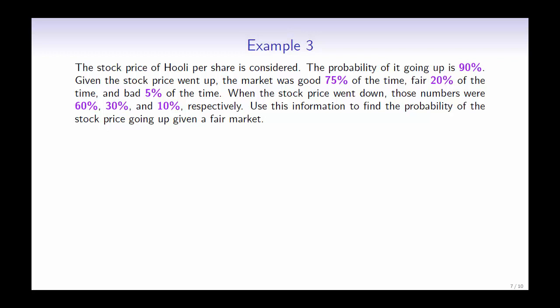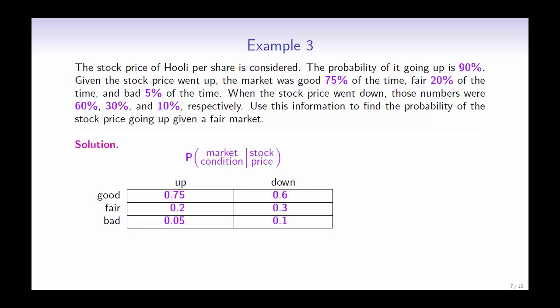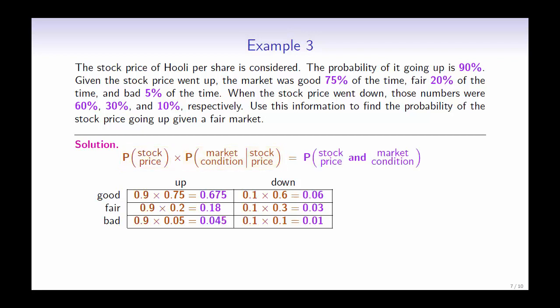Use this information to find the probability of the stock price going up given a fair market. From the given information, the probability of a good market given that the stock price went up is 75%, and the probability of a good market given that the stock price went down is 60%, and so on. Using the chain rule, we multiply the prior probabilities by the conditional probabilities to give us the joint probabilities. For example, the probability of a good market and the stock price going up is 0.9 times 0.75, which equals 0.675.